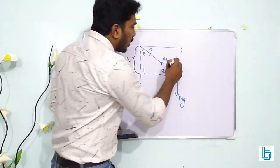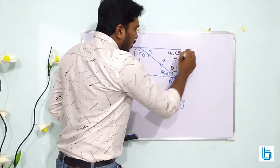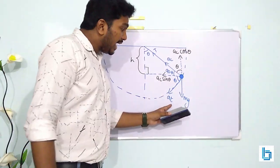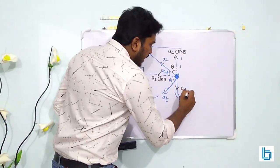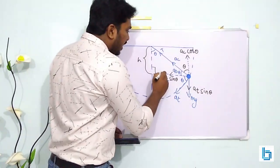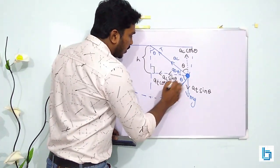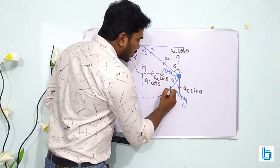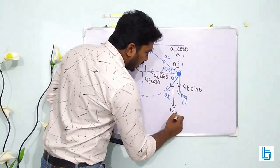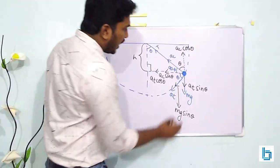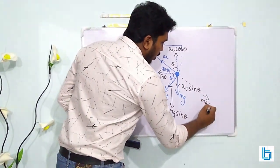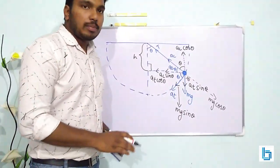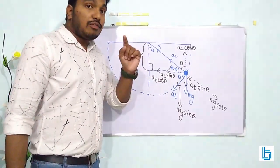Resolving AC into components: one component is AC cos theta and the other is AC sin theta. Similarly, AT can be resolved into AT sin theta and AT cos theta. And mg can be resolved into mg sin theta in one direction and mg cos theta in the other direction.